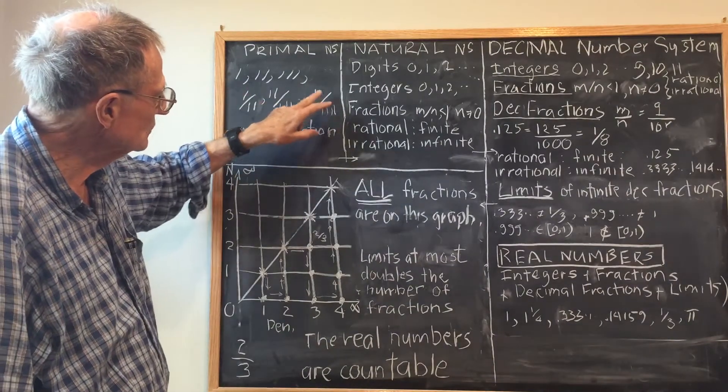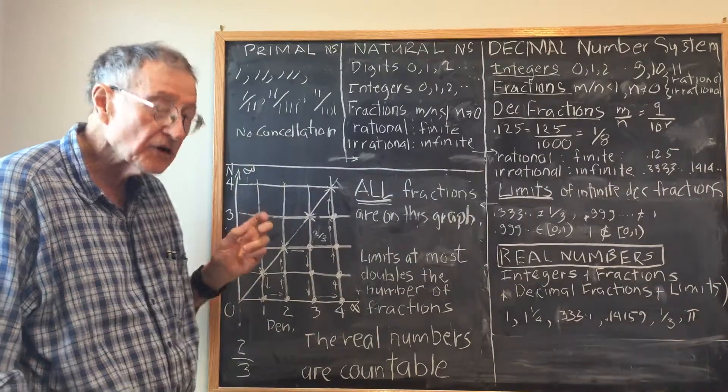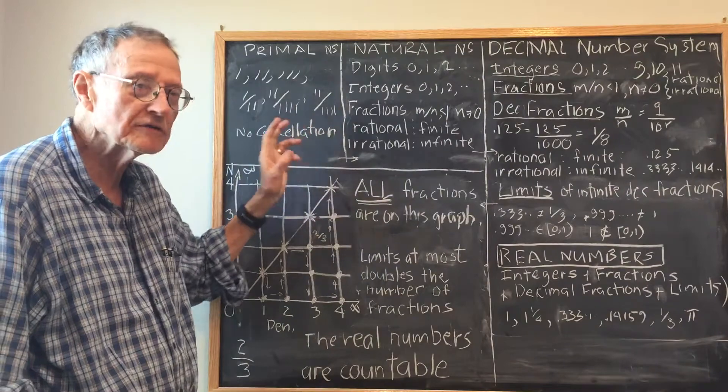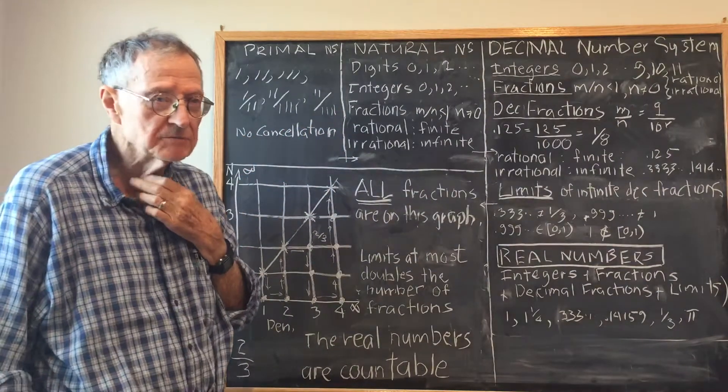In that case we have the primal fractions: one over two, two over three, two over four. Notice that one sheep out of a herd of two is not the same as two sheep out of a herd of four. So there's no cancellation in the primal number system.